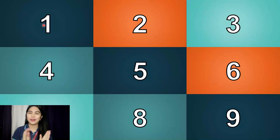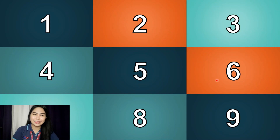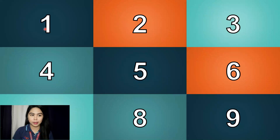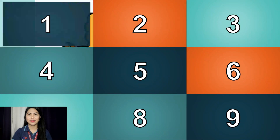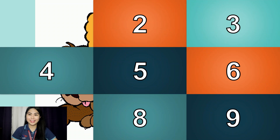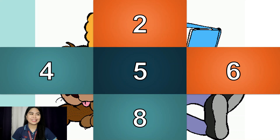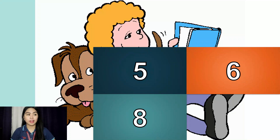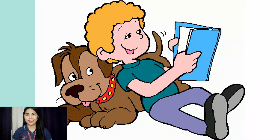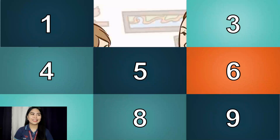Before we proceed, let's have an activity called the Picture Reveal. You have to guess what the image is about — what activity you see on the image before all the numbered squares disappear. I will click on the numbered squares. So, what do you think? What is the boy doing? That's right, the boy is reading a book.